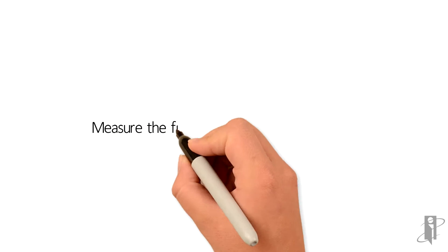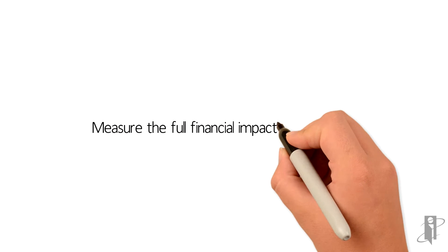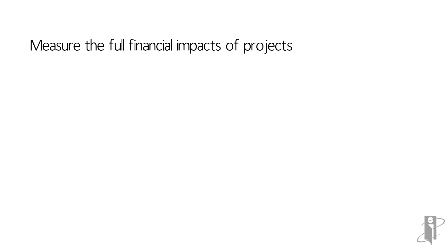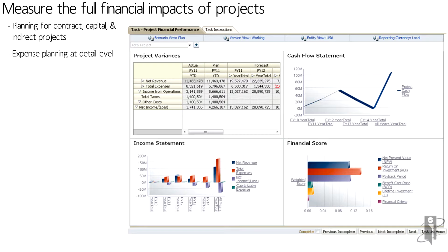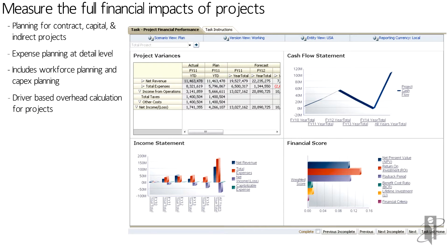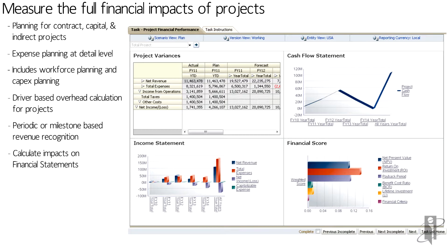PFP provides a number of out-of-the-box data forms, task lists, business rules, and components to meet the needs when you're planning your projects. You can plan for contract, capital, or indirect projects. You can do expense planning at a very granular level or at a summarized level. PFP includes workforce planning and capex planning modules, driver-based overhead calculations, and periodic or milestone-based revenue recognition. When you make changes in PFP to your forecasts, you can calculate the financial impact to your income statement, your balance sheet, and your cash flow.